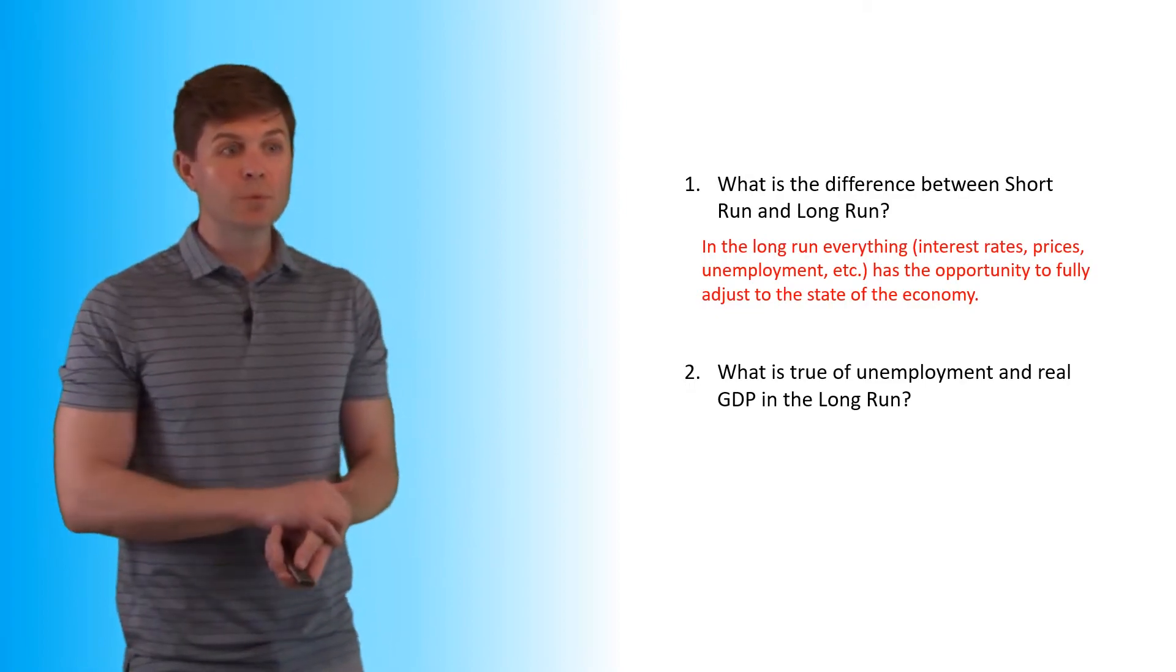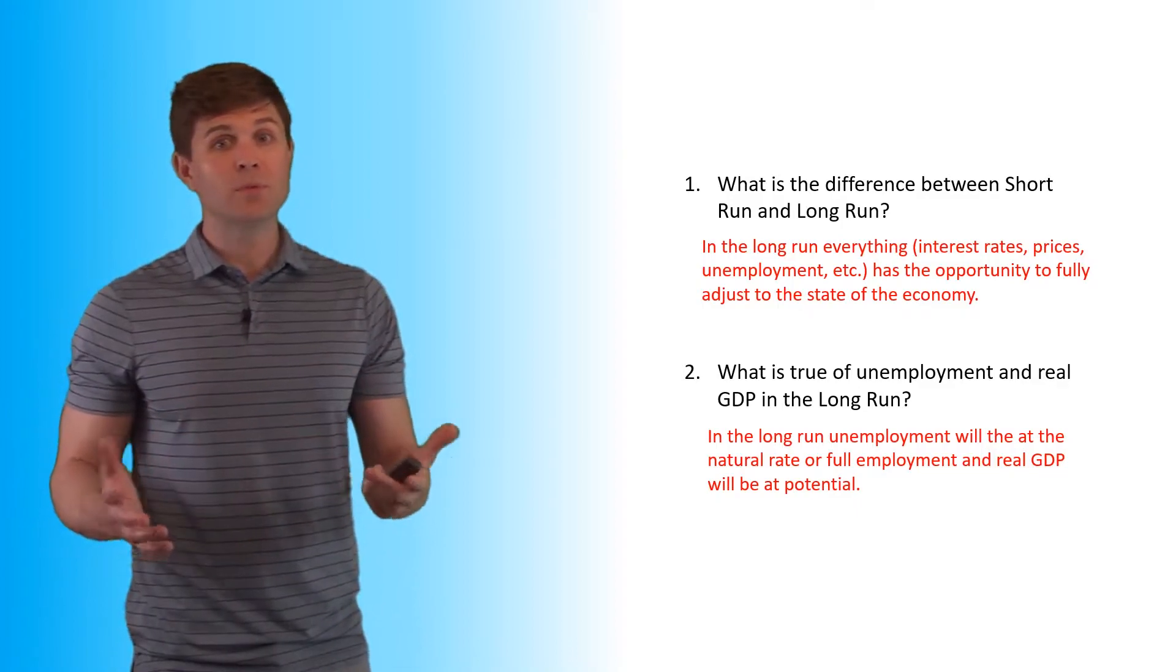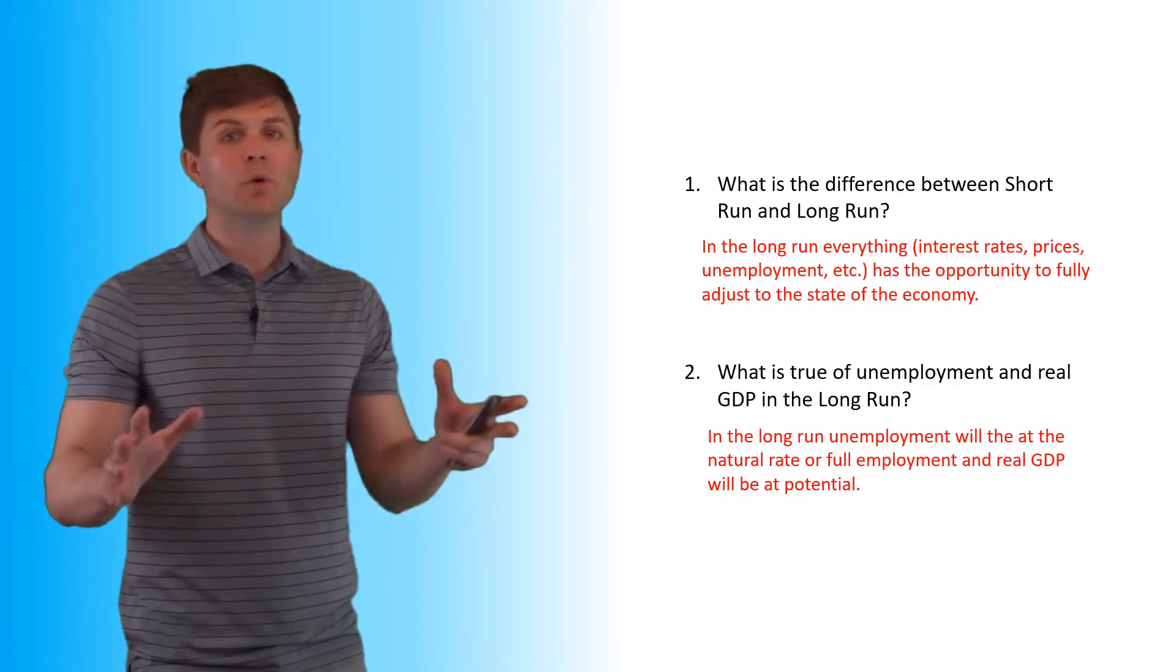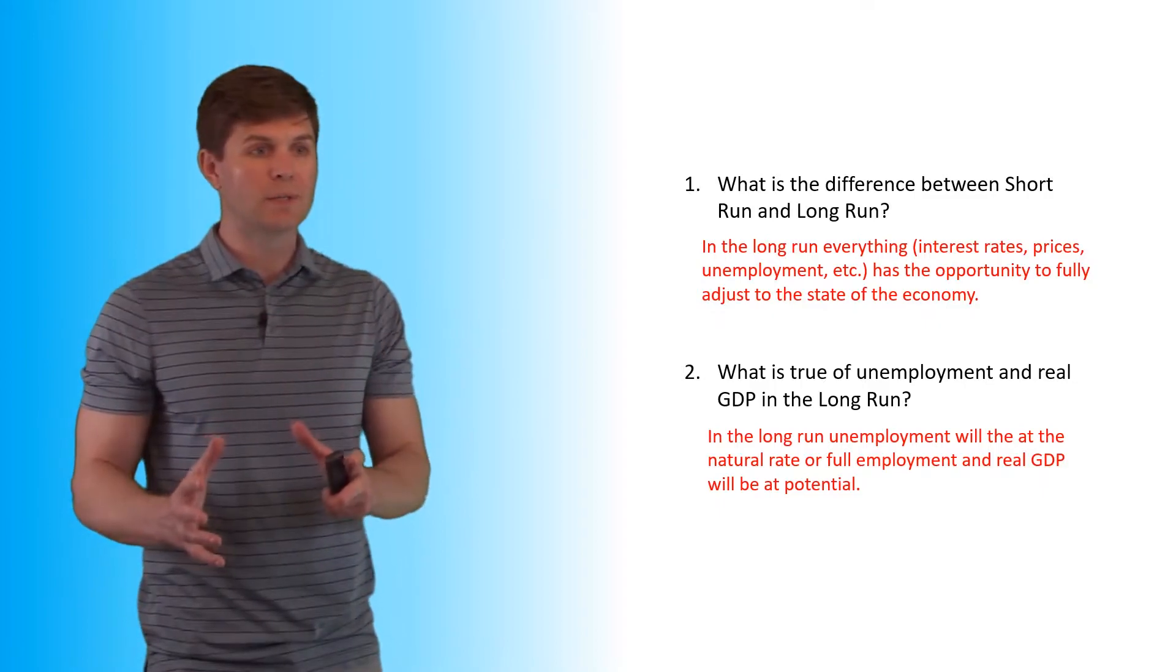What is true of unemployment and real GDP in the long run? In the long run, unemployment is going to be at its natural rates. We're going to be at full employment in the long run. No cyclical unemployment exists in the long run because everything will auto adjust back to where it needs to be.